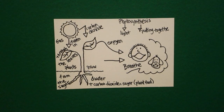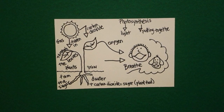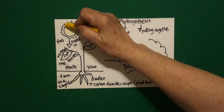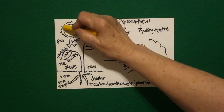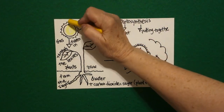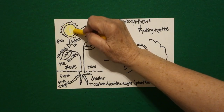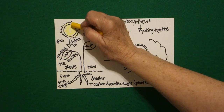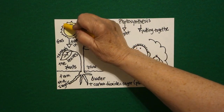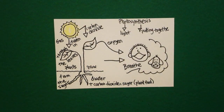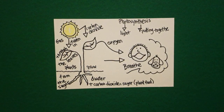Let's see how we're going to color this in. Probably the most important thing is our energy source, which is the sun. It's very important for the plants — that's why we always say most plants need the sun in order to grow. So we're going to do that yellow.